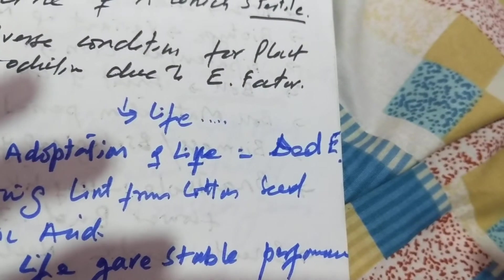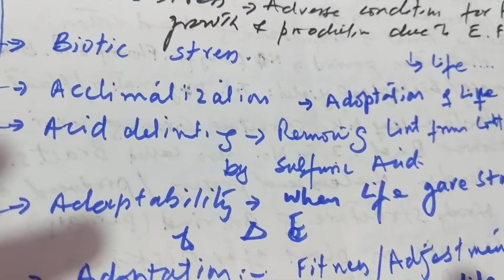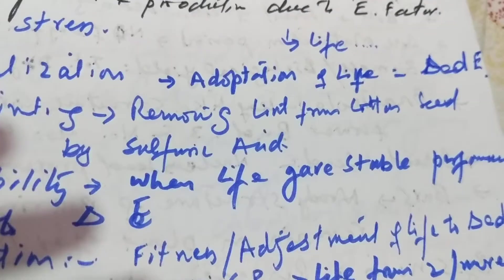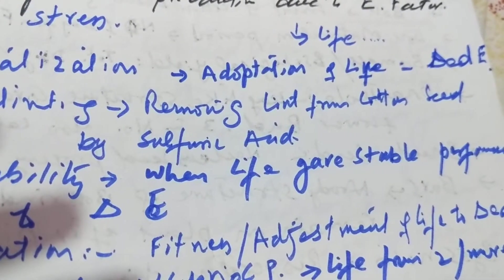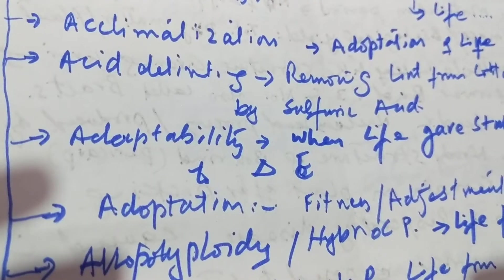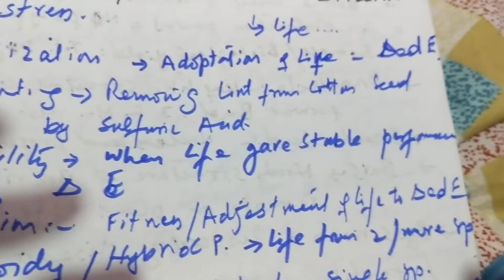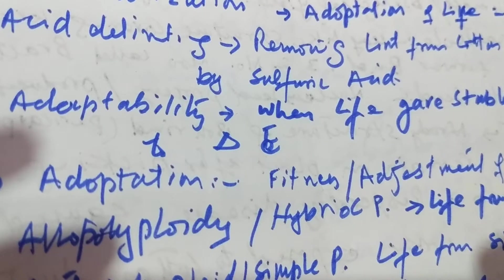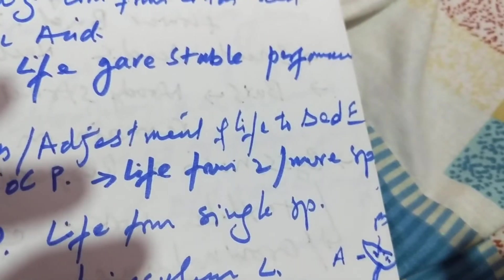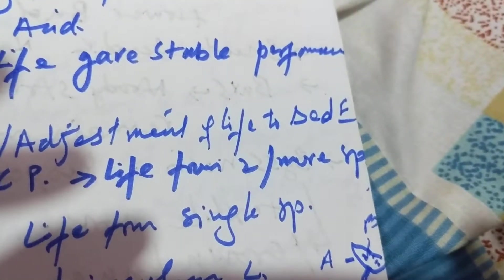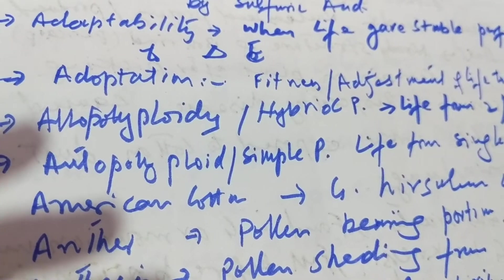Acclimatization is the adaptation of life in a changed environment. Acid delinting is the removing of lint from cotton seed by sulfuric acid. Adaptability is when a variety gives stable performance in a changed environment.